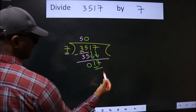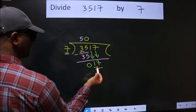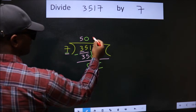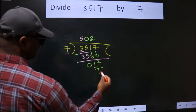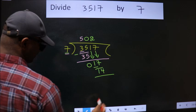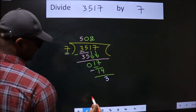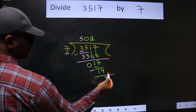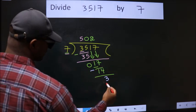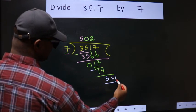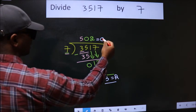So, 17. A number close to 17 in the 7 table is 7 times 2, which is 14. Now we subtract, we get 3. No more numbers to bring down, so we stop here. This is our remainder. This is our quotient.